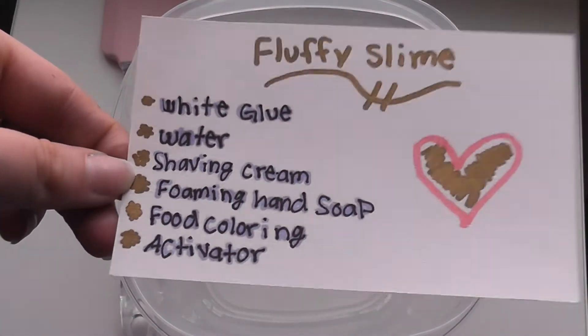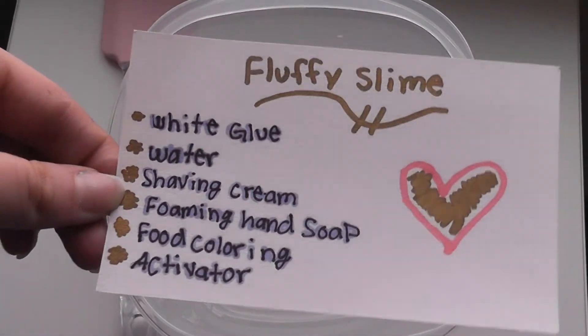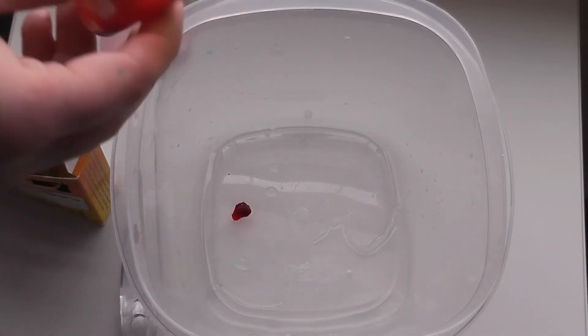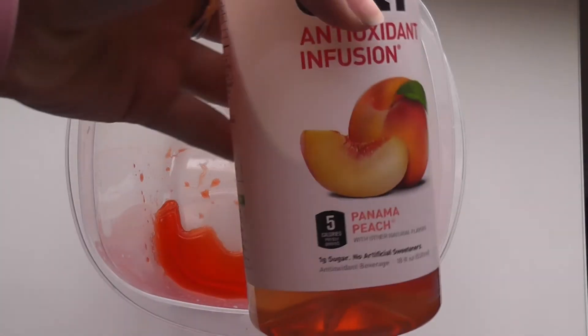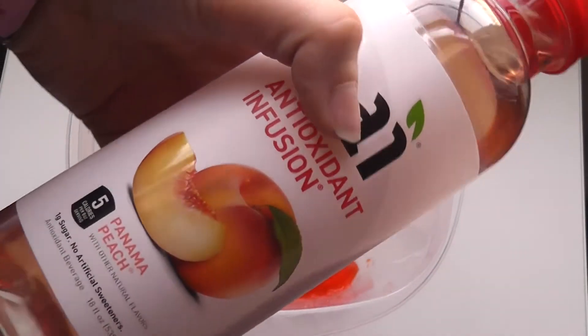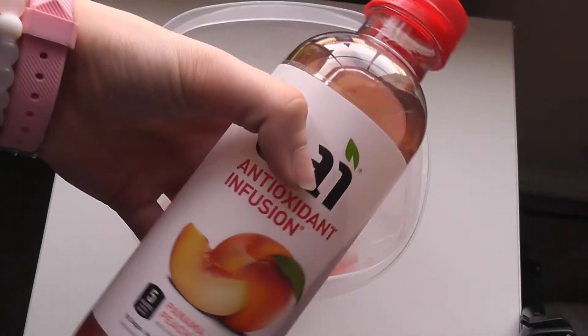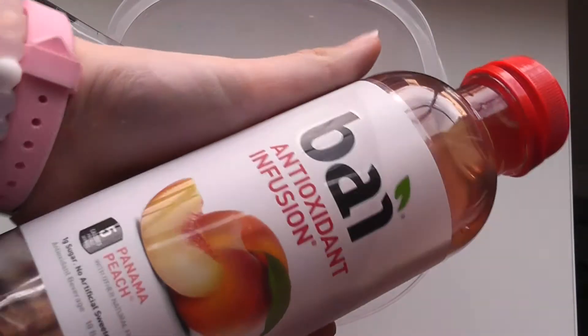The next slime is fluffy slime. I did decide to make these cards to make it easier for myself. First, you want to add in your activator, which I didn't show. Then I wanted a peach color, so I added in a drop of red. This one was inspired by this Peach By drink. I was drinking it and was like, you know what, I'm going to make a peach slime because this drink is so good.